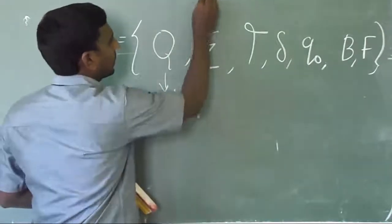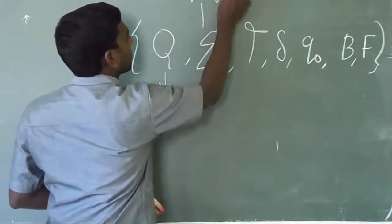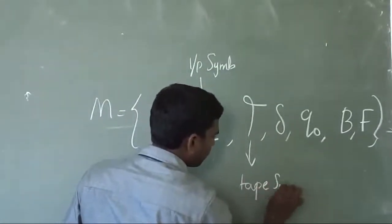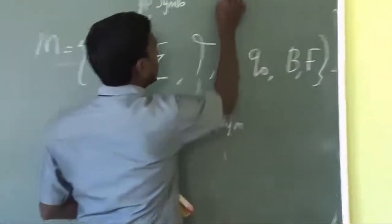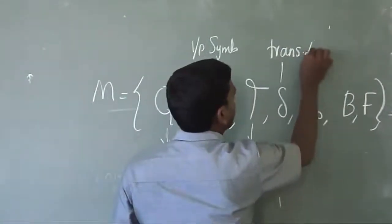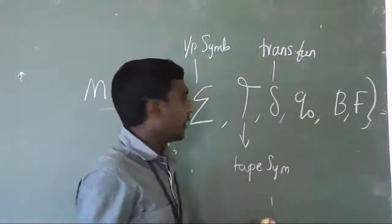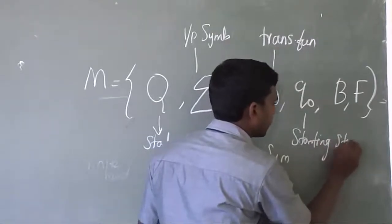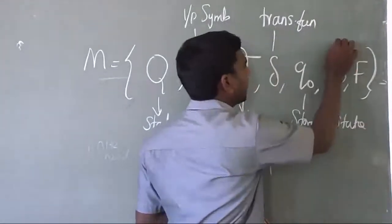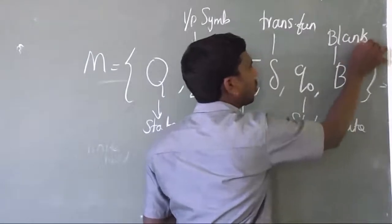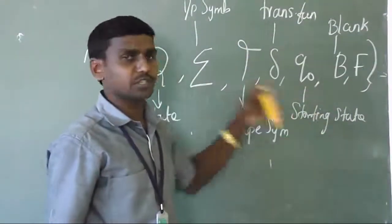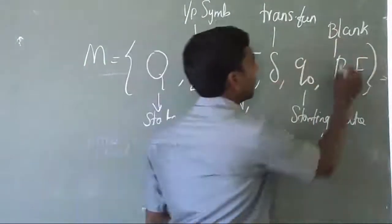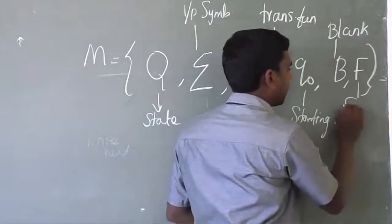The parameters are: Q which stands for the finite set of states; Σ which is the input alphabet; Γ (rho) which is the tape symbol; δ which is the transition function; q0 which is the starting state; B which is the blank symbol — as mentioned, blank symbols are present on the left and right side of the input tape; and F which is the final state.